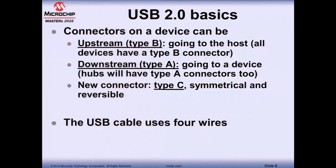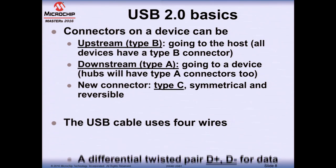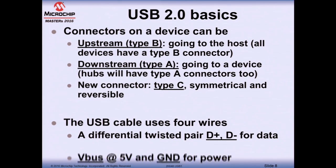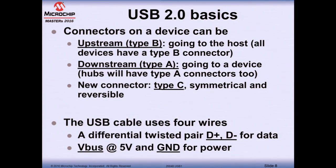The cable has four wires inside: a differential twisted pair D+ and D- used to exchange data, and two wires — VBUS at nominally five volts and ground — for power.